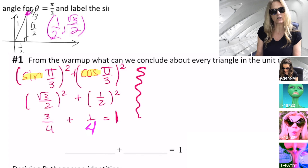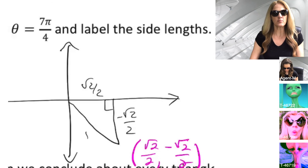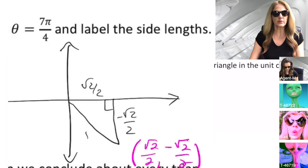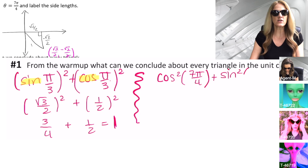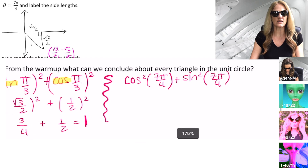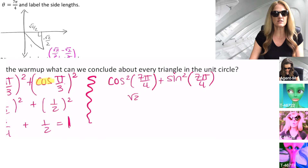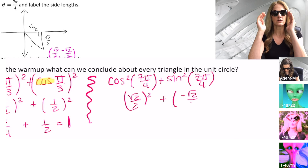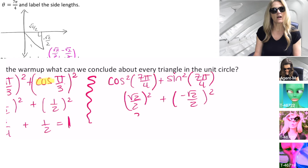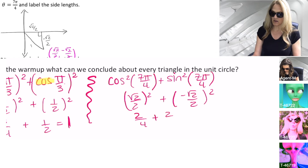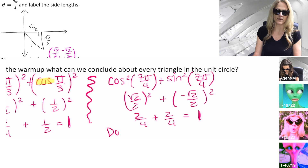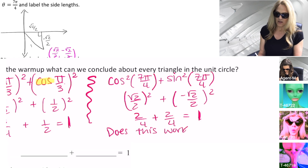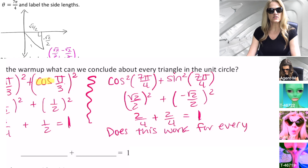Interesting — sin²(π/3) + cos²(π/3) = 1. Does this work always? Next example. I'm going to use alternate notation — please be aware of this new notation: cos²(7π/4) + sin²(7π/4). This is very useful notation; the square goes next to the trig function. It is equivalent to saying cosine of 7π/4 quantity squared. And indeed, trainees, we see cos²(7π/4) + sin²(7π/4) = 1.